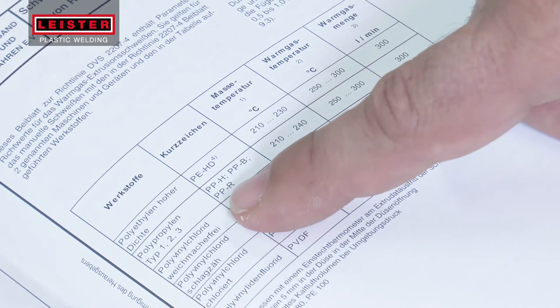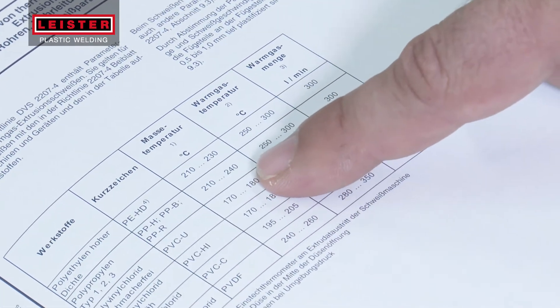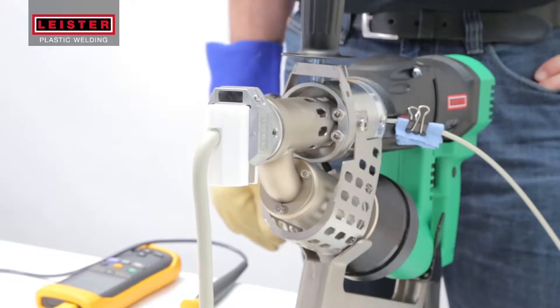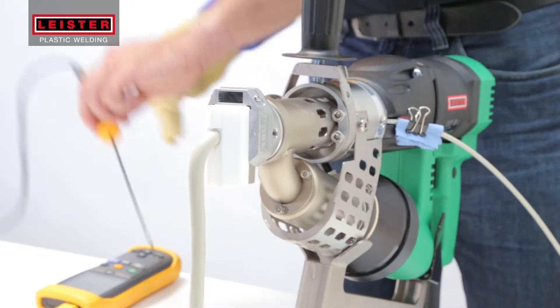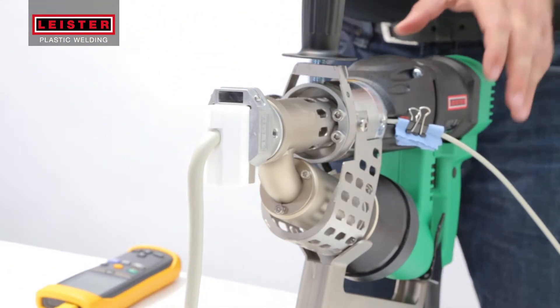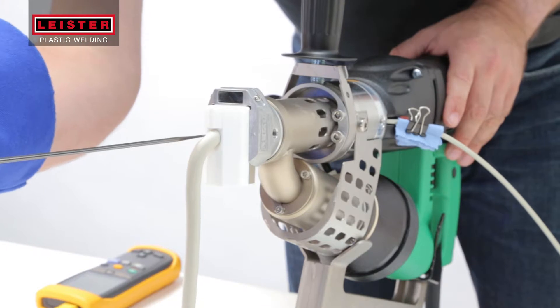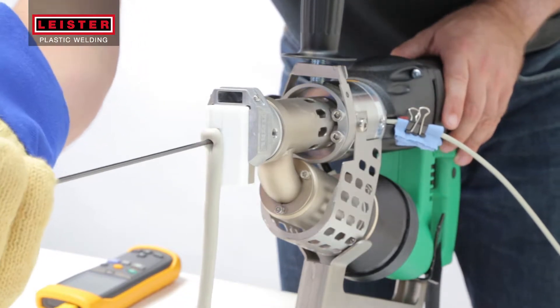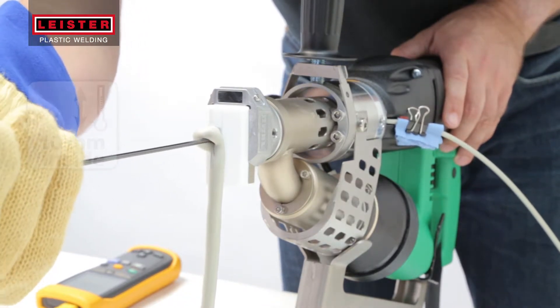The processing temperatures for the type of plastic being welded can be found in the material manufacturer's data sheet. To test the plast temperature, insert a needle temperature probe and measure the material at 10 millimeters inside the welding shoe.